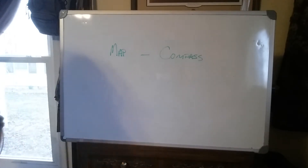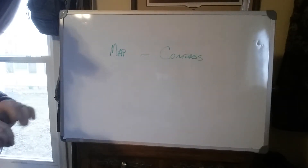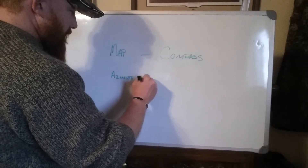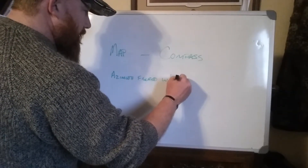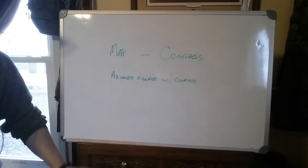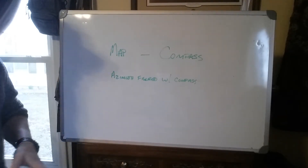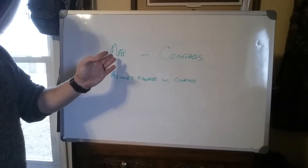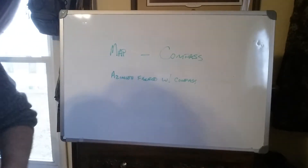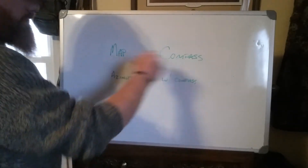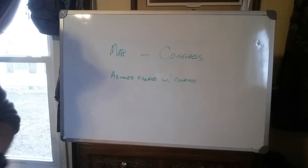This is going from map to compass if you use a compass to figure out your azimuth. If you use a protractor, you don't have to do this. I'm going to explain that more in a later video — I'm going to do a video talking about how to find azimuth on a map and actually get a map out and show you. If you use the compass to figure out your azimuth, you want to take into consideration the magnetic declination. If you use a protractor to figure out the azimuth, you don't have to do this.